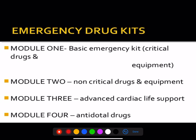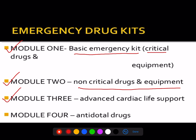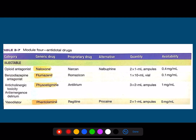If you take the medical drug kit into consideration, you have these modules. Module 1 consists of a basic emergency kit — that is the critical drugs and equipment. Module 2 contains non-critical drugs and equipment. Module 3 contains the advanced life support system, and Module 4 contains the antidotal drugs. They can ask you the module and what it contains. Please do make a note — these are the most commonly asked questions related to the antidotals.